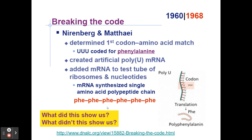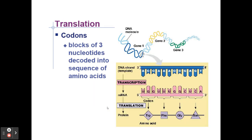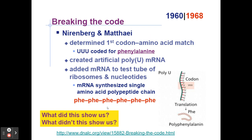What it did not tell them was how many nucleotides were needed to code for one amino acid. But that was solved by math. If one nucleotide coded for one amino acid, the maximum number of amino acids would be four — uracil would code for phenylalanine, adenine for another like proline, cytosine for another like lysine, and guanine for another. That's vastly short of the 20 you would need.